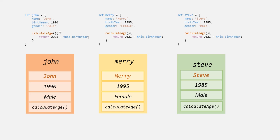If you notice these three objects, all three have the same property names and the same method, and the implementation of the method is also the same. If we have to create 100 objects like this, then we will use this object literal 100 times. But in object-oriented programming, one of the important concepts is to create a blueprint.